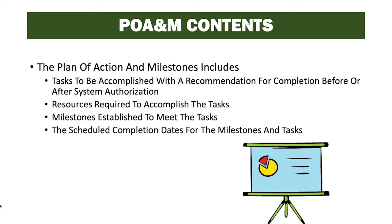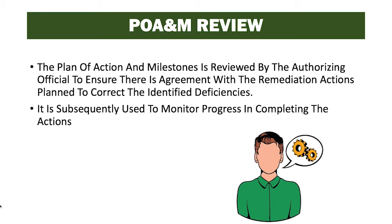It's important to note that remediation can take place either before or after system authorization. If done after authorization, we are telling the authorizing official that if they authorize the system, this is when we will fix the findings discovered during the assessment. It is essentially an agreement between the system owner or common control provider and the authorizing official on when controls will be fixed. The authorizing official reviews the POAM to ensure agreement with the remediation actions and subsequently uses it to monitor progress on completing those actions.